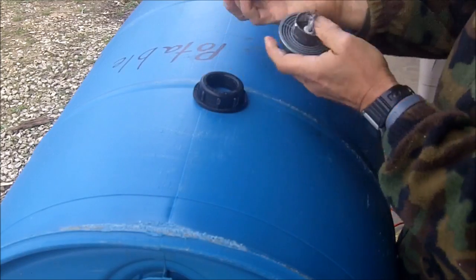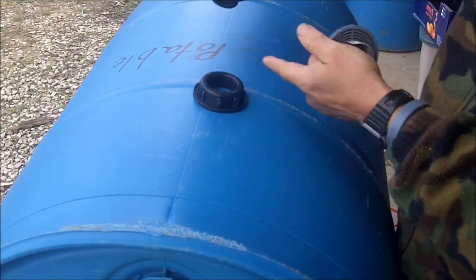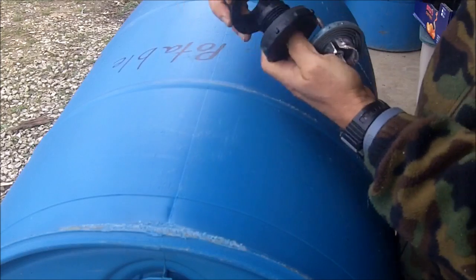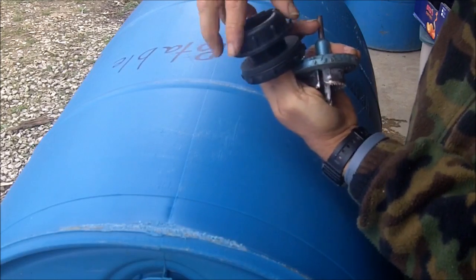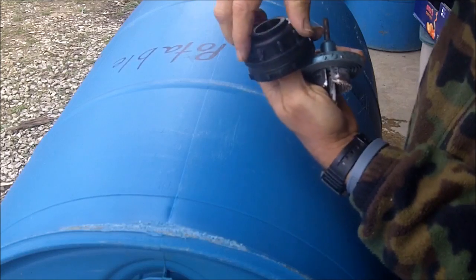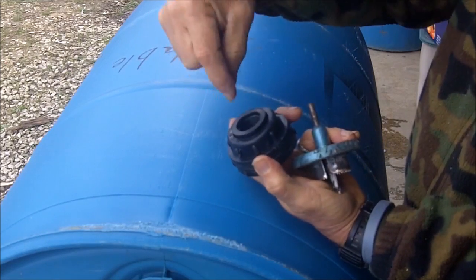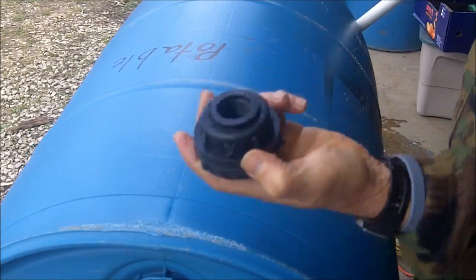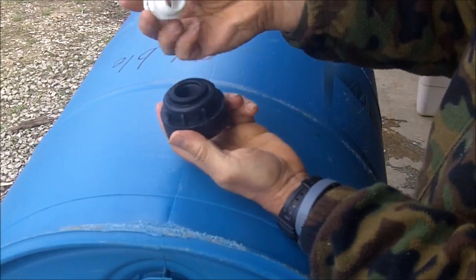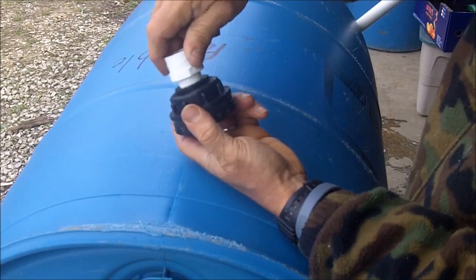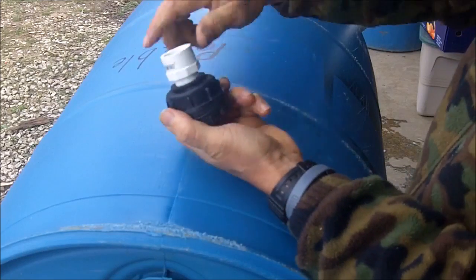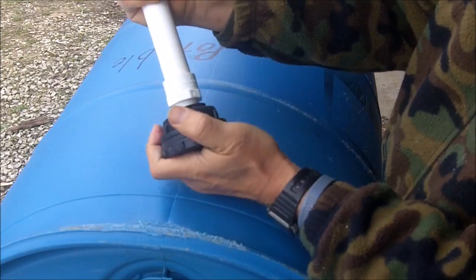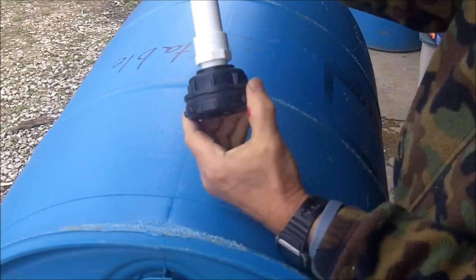Once I get the hole drilled, I stick the bulk head adapter through. This gasket goes on the outside. This part screws on the other side with reverse thread. Then I'll put an adapter here to put my PVC pipe on. This adapter is three quarter inch, which allows my three quarter inch PVC pipe to plug into it.